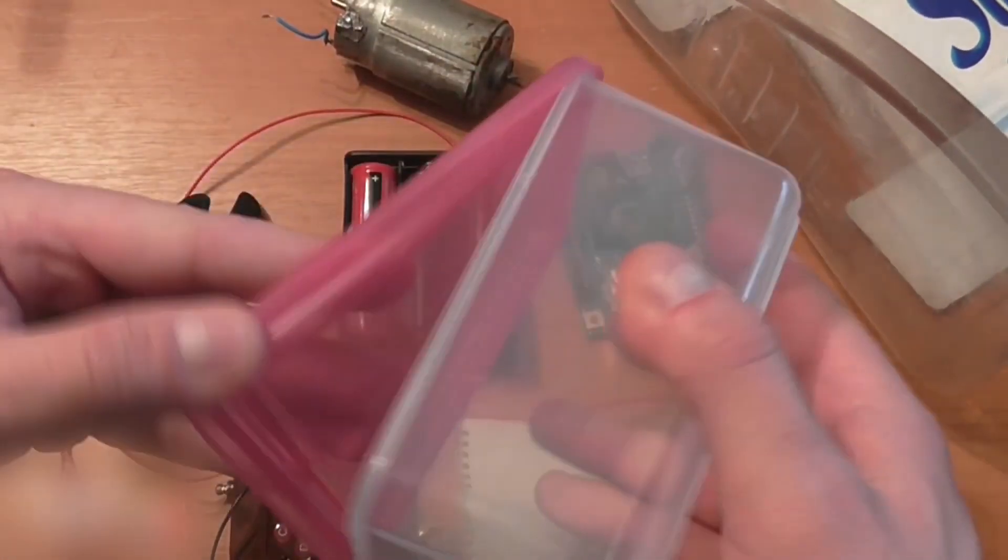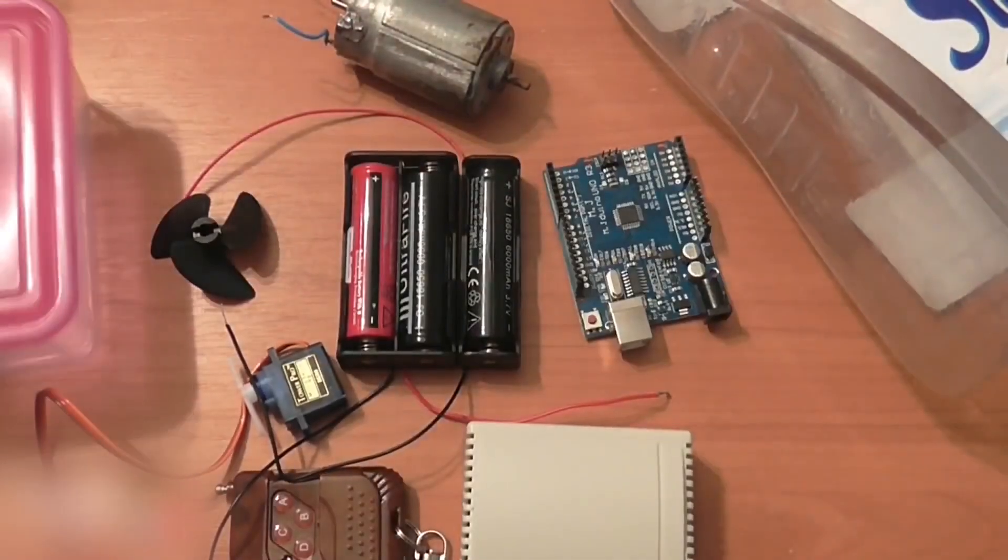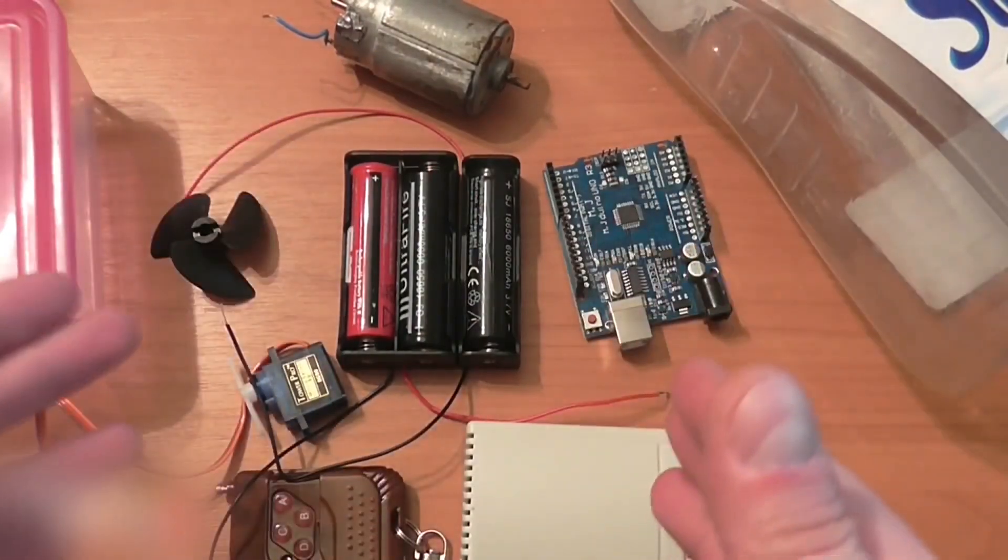Use a plastic container to seal all the electronics. You will also need some wires and bolts.